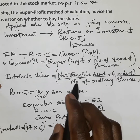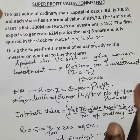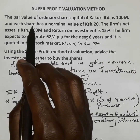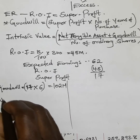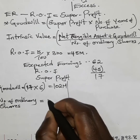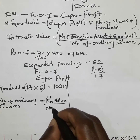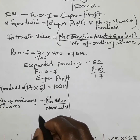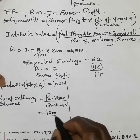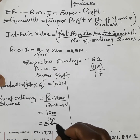Next, we get the number of ordinary shares. The par value of ordinary share capital of Kakuzi is 100 million, and each share has a nominal value of 20. So the number of ordinary shares = par value / nominal value = 100 million / 20 = 5 million shares.